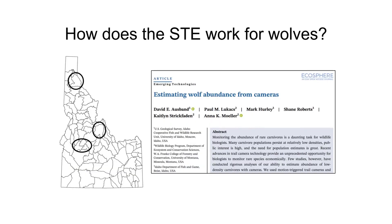We tested how the space-to-event model worked for estimating wolf abundance in three smaller study areas of Idaho during 2016 to 2018. We compared the camera estimates to estimates generated from a more traditional method, which involves the collection and analysis of DNA from sites used by wolves in the summer. Estimates between the two methods were very similar, and the results of that study were also recently published.